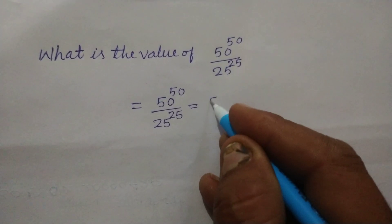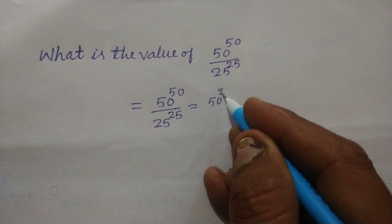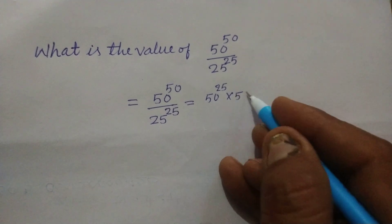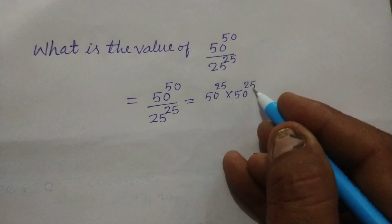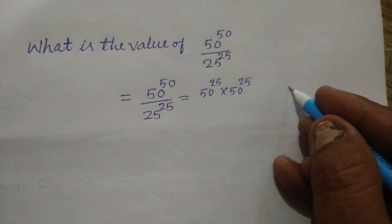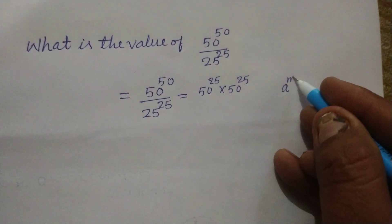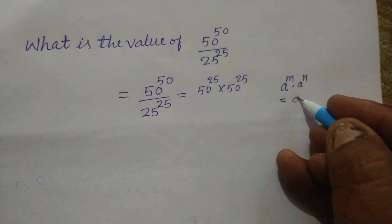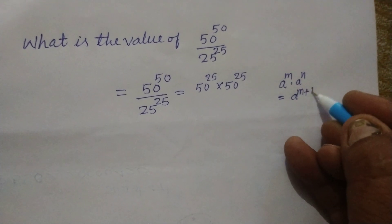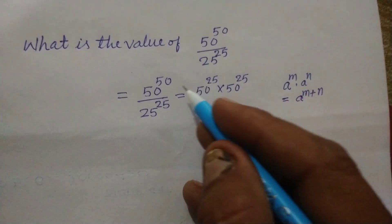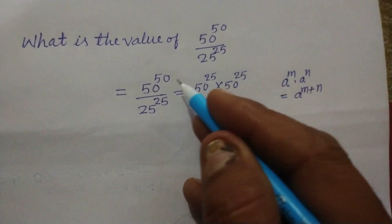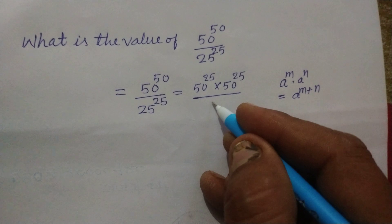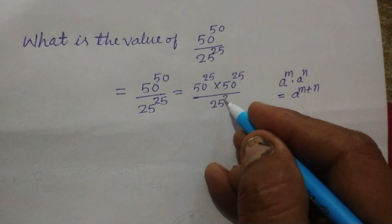We can write 50 to the power 50 as 50 to the power 25 into 50 to the power 25, because you know that if a to the power m into a to the power n, then this is a to the power m plus n. So 25 plus 25 is 50. So we write this as here 25 to the power 25.